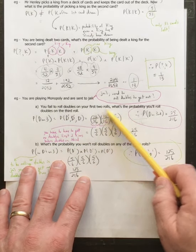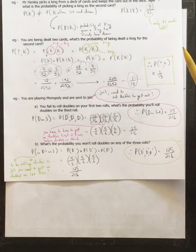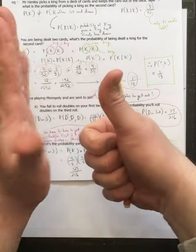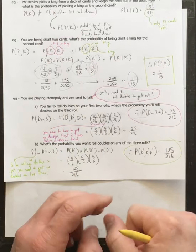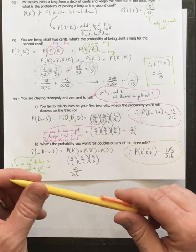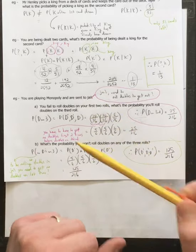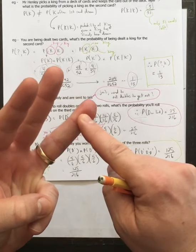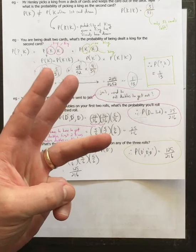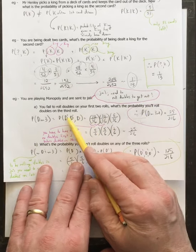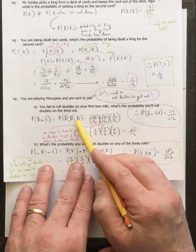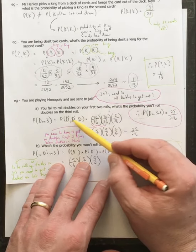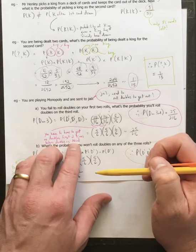You fail to roll doubles in the first two rolls. What's the probability you'll roll doubles on the third roll? The probability of rolling doubles is six out of 36 — that's 1-1, 2-2, 3-3, 4-4, 5-5, and 6-6. But to roll doubles on the third roll to get out of jail, you must have had no doubles for the first two rolls. So it's: not doubles, not doubles, and then doubles — all multiplied together.